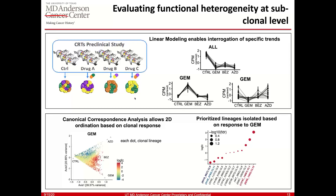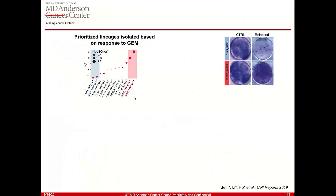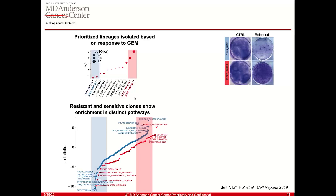We have not just looked at response in a high-throughput manner — we have extracted specific lineages and can do deeper analysis. To confirm their behavior, the lineage in blue — a sensitive lineage — is not able to relapse in a petri dish, whereas the one in red is able to create colonies again. We performed RNA sequencing to understand what pathways are enriched. We see two sets of pathways — Hallmark and KEGG. Oxidative phosphorylation is incredibly enriched in the resistant lineages, while ECM interaction, IL5, and STAT signaling are depleted in these resistant lineages.